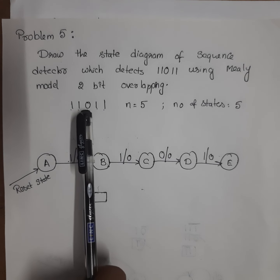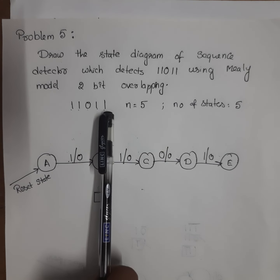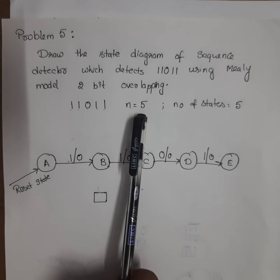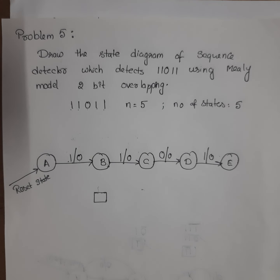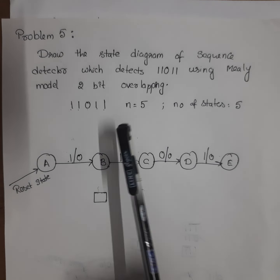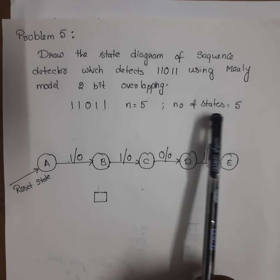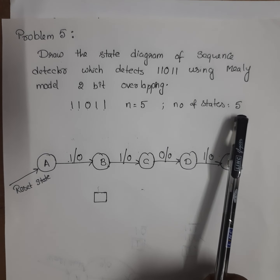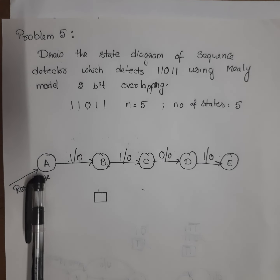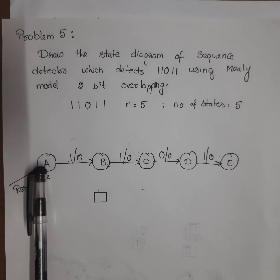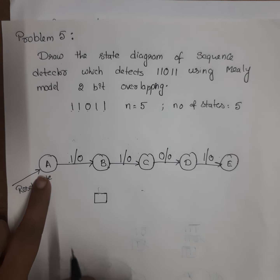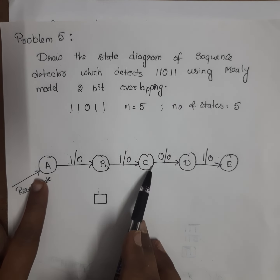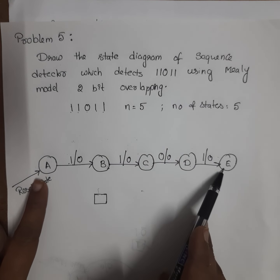Here n is equal to 5 for the Mealy model. The number of states equals the number of bits, so here the number of states is 5. Draw the 5 states 1, 2, 3, 4, 5 and label them as A, B, C, D, E.